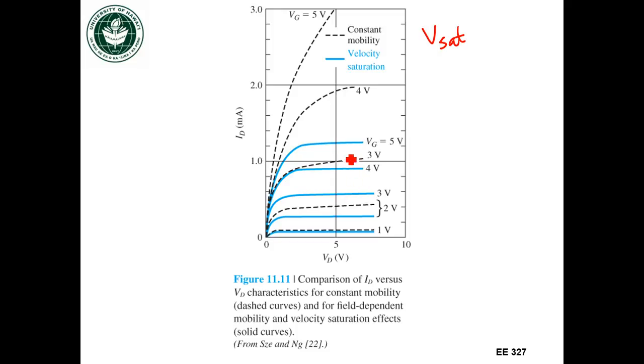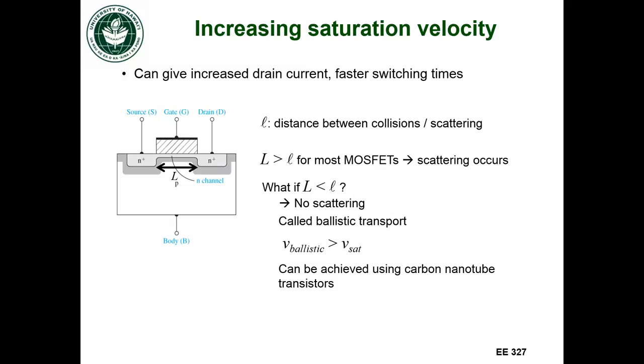Four volts, that difference gets higher. Five volts, that gets higher and so forth. So to get increased drain current and faster switching times, we could actually increase the saturation velocity.